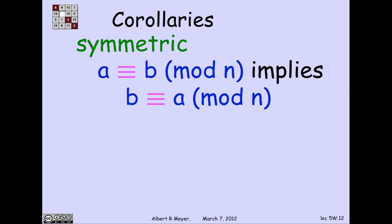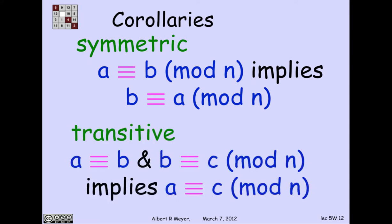And that's obvious because a congruent to b means that a and b have the same remainder. So b and a have the same remainder. One that would actually take a little bit of work to prove from the division definition, not a lot of work, but a little bit, would be that if a is congruent to b and b is congruent to c, then a is congruent to c.